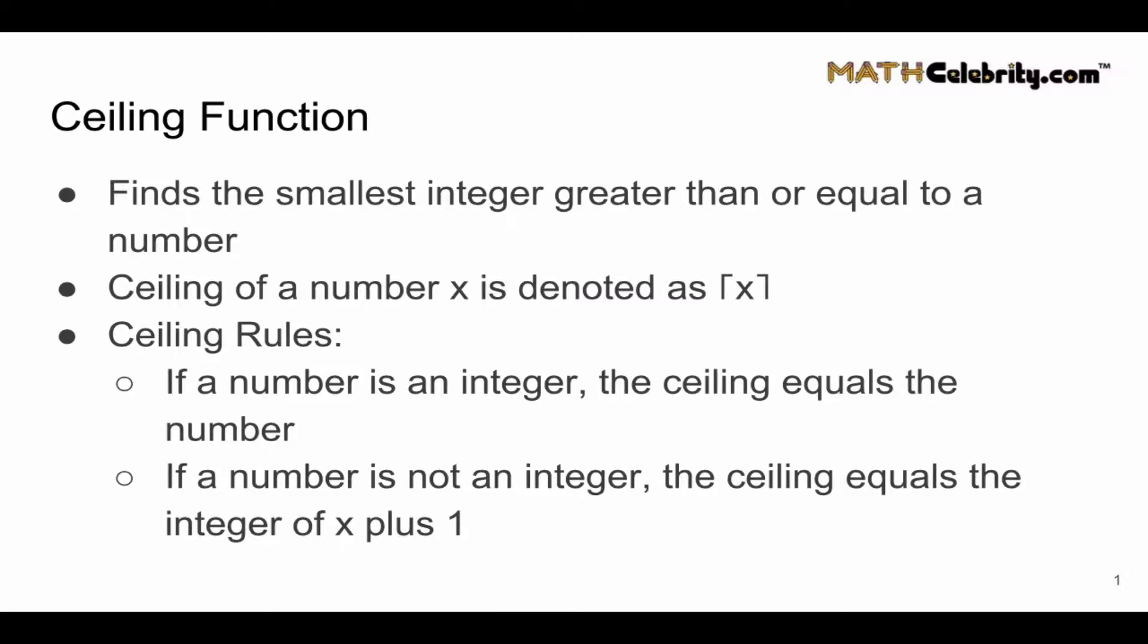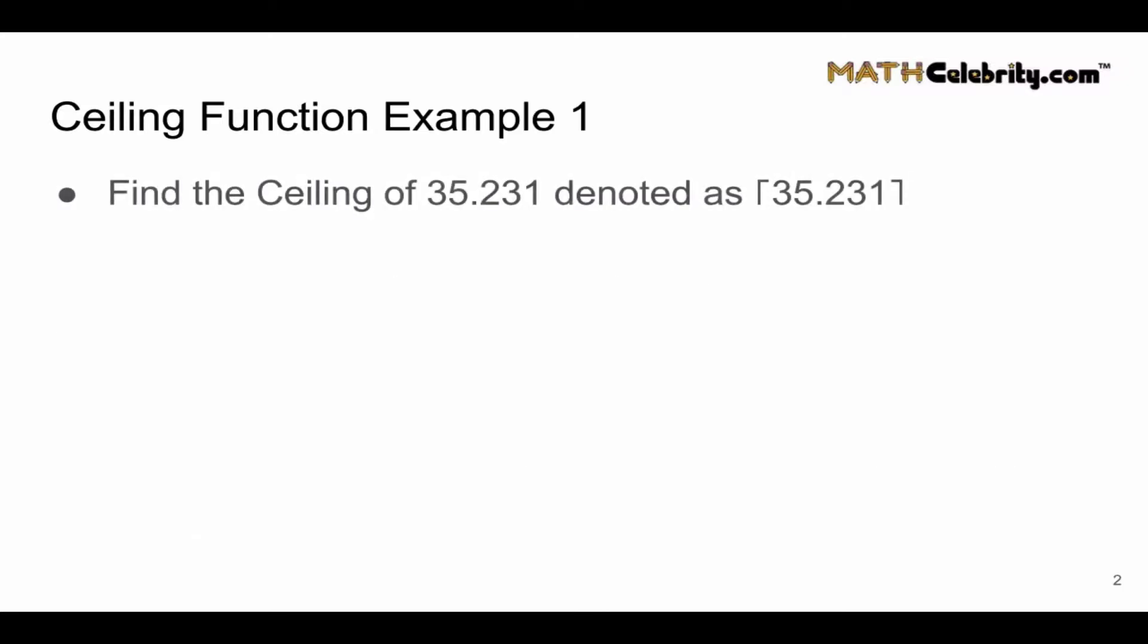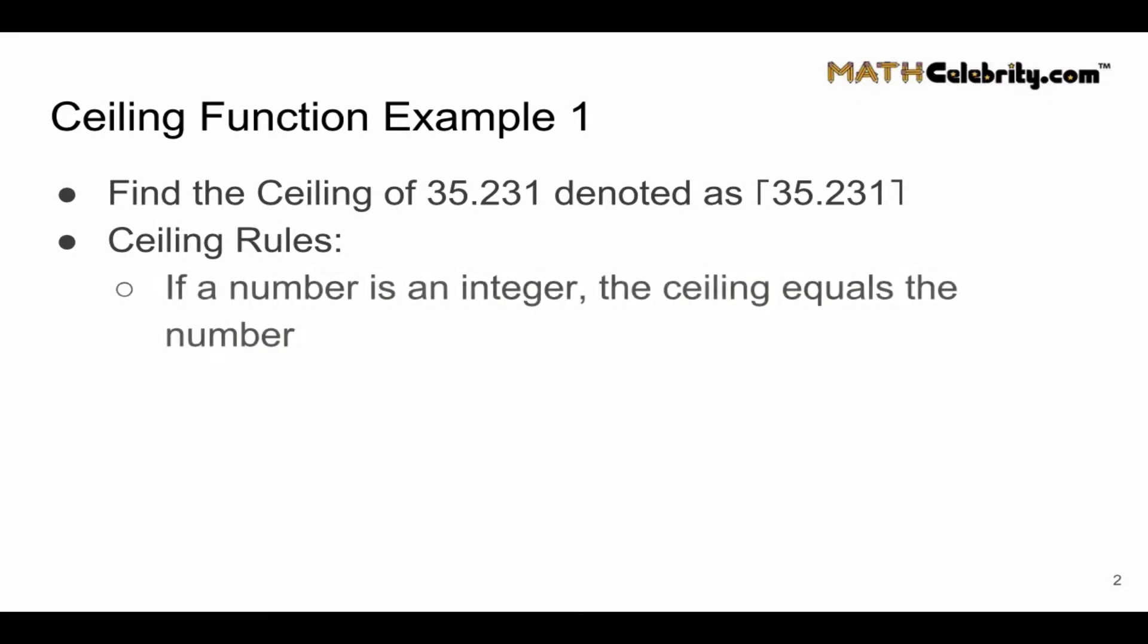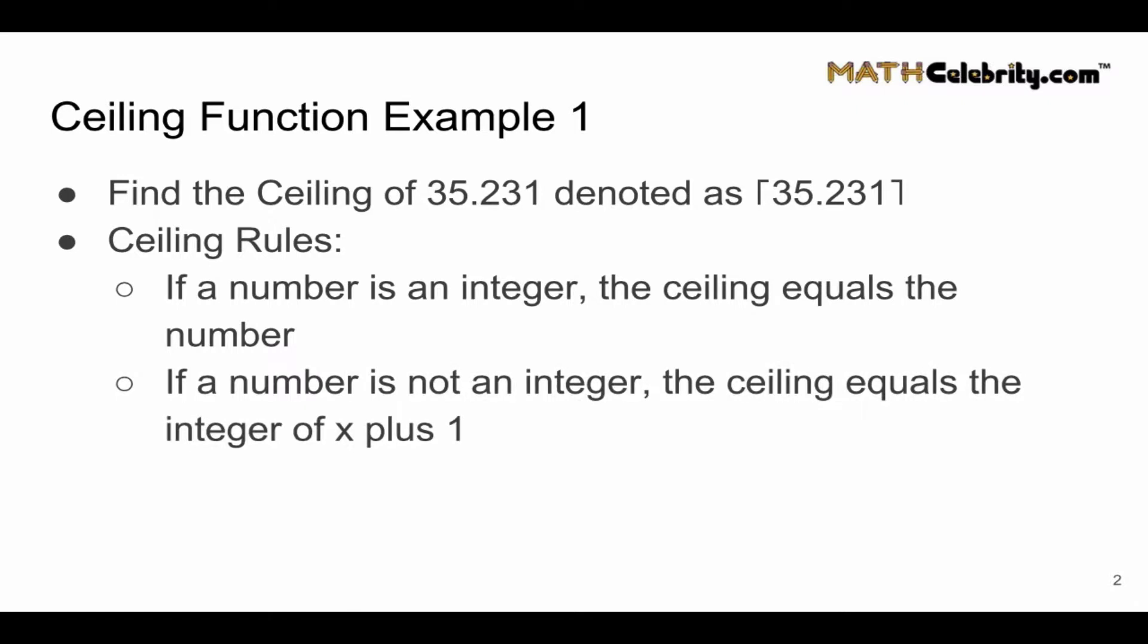So let's walk through a few examples. We want to find the ceiling of 35.231. Let's walk through our two-part ceiling rules. Is the number an integer? No, it's not. It's got a decimal piece. So we move to part two.